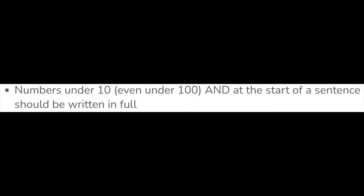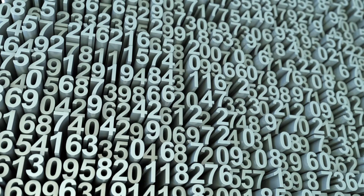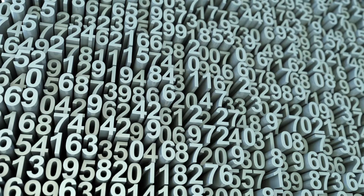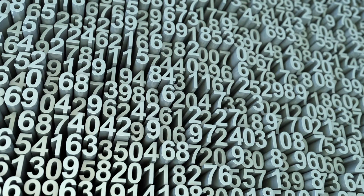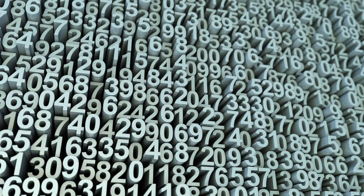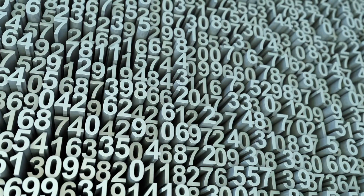Tip number two: numbers under 10 — and even under a hundred — and numbers that are used at the start of a sentence should always be written in full. So don't write the numeral like '10', but spell the number out, like 't-e-n'.